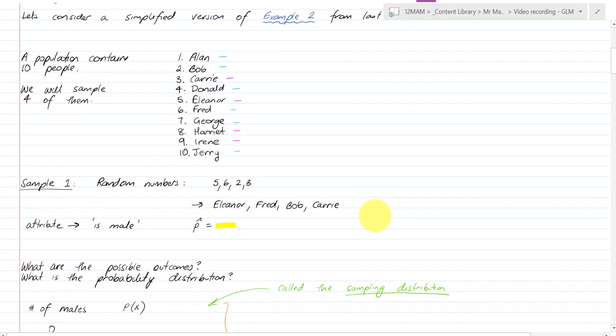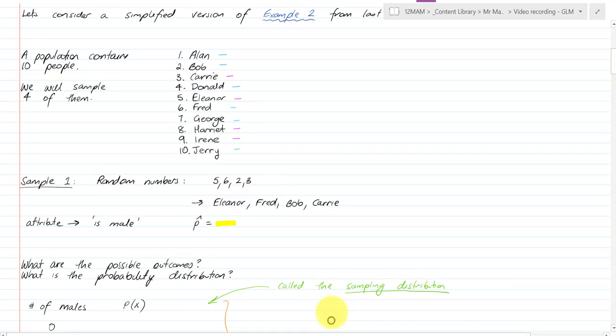Now I've already done a random sample just for this example and the numbers I got were 5, 6, 2 and 3 and so those students were Eleanor, Fred, Bob and Carrie. Now if the attribute is male then my sample proportion is 2 out of 4. So I chose 4 and 2 out of 4 of them were male and that being Fred and Bob. So there's a sample proportion from a sample of that class.